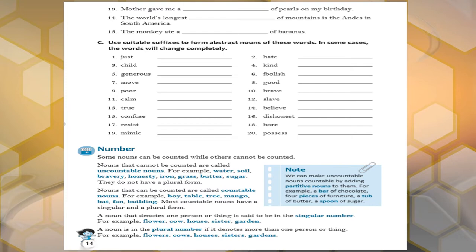But here, some nouns are there. You can make it positive nouns. Like in notes, you can see, you can make uncountable nouns a countable one. You can convert it by adding some, like chocolate, a bar of chocolate, furniture, four pieces of furniture. Like this, you can make uncountable noun to countable.